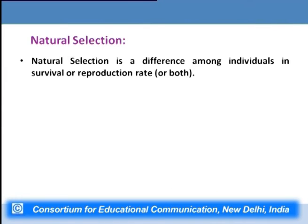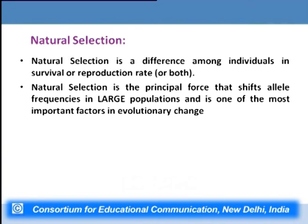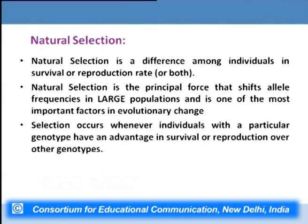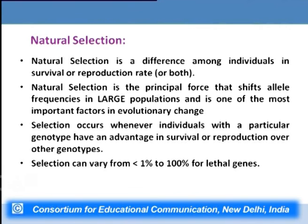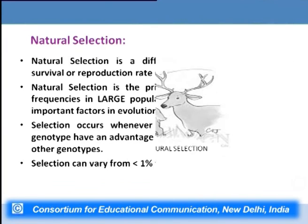Natural selection is basically a difference among individuals in survival or reproduction rate, and it is the principal force that shifts allelic frequency in large populations. In small populations it is genetic drift whereas in large populations it is natural selection. Selection occurs whenever individuals with a particular genotype have an advantage in survival or reproduction over other genotypes. The selection can vary from 1% to 100% for lethal genes, which may be completely selected against or may have a lesser degree of lethality.